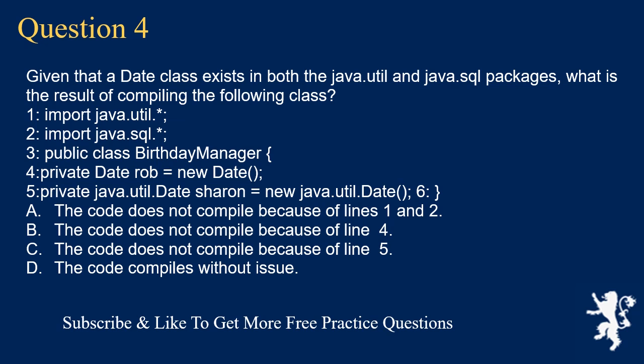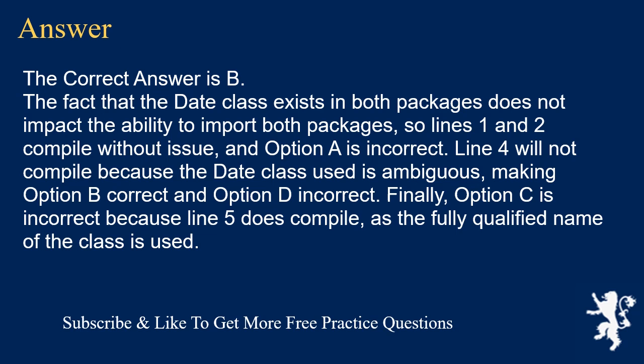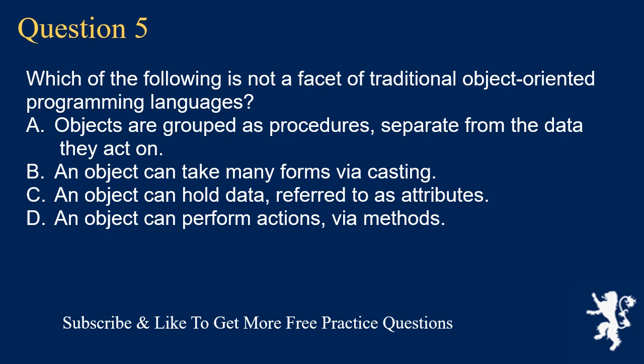Question 4: Given that a Date class exists in both the java.util and java.sql packages, what is the result of compiling the following class? Line 1: import java.util.*, line 2: import java.sql.*, line 3: public class BirthdayManager, line 4: private Date rob = new Date(), line 5: private java.util.Date share = new java.util.Date(). Options: A) does not compile because of lines 1 and 2, B) does not compile because of line 4, C) does not compile because of line 5, D) compiles without issue. The correct answer is B. Lines 1 and 2 compile fine. Line 4 does not compile because the Date class used is ambiguous. Line 5 does compile as the fully qualified name is used.